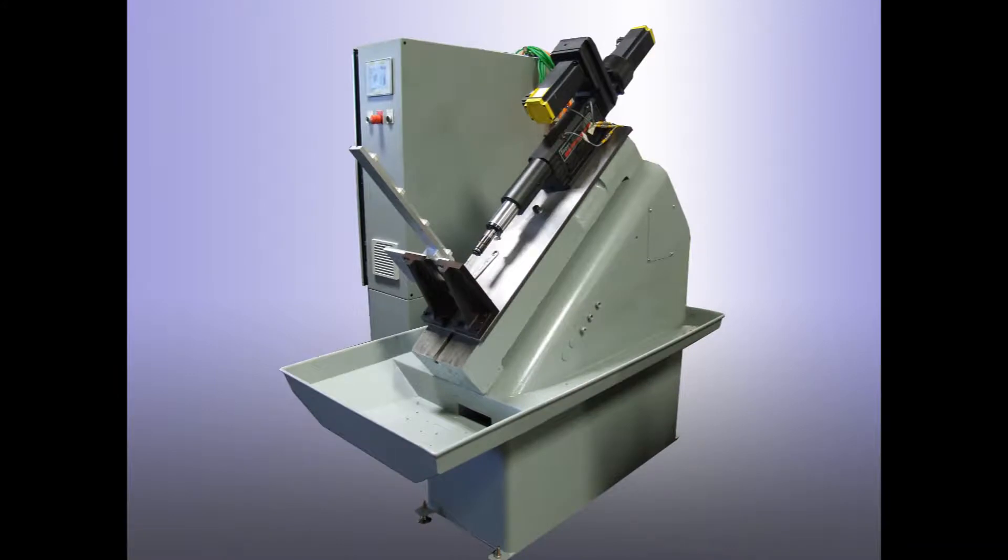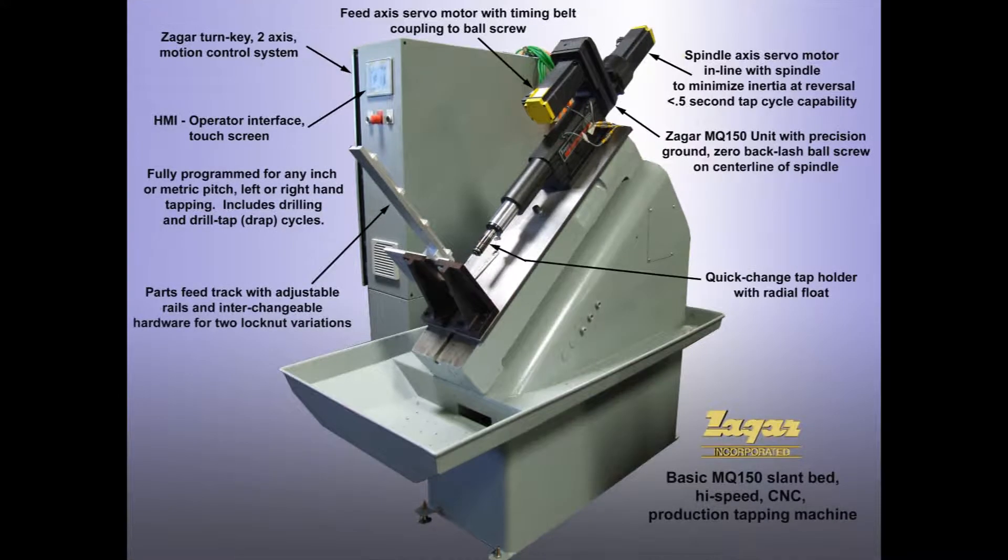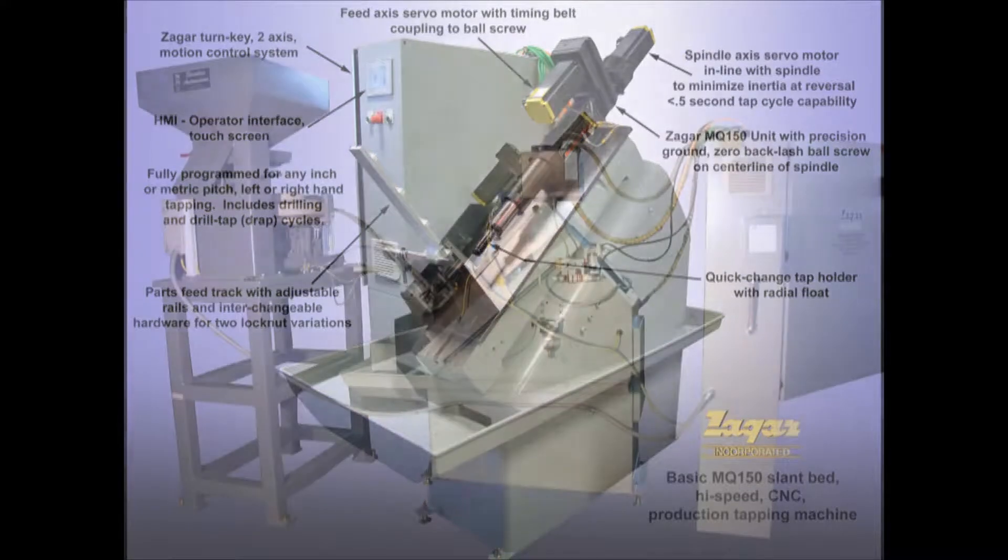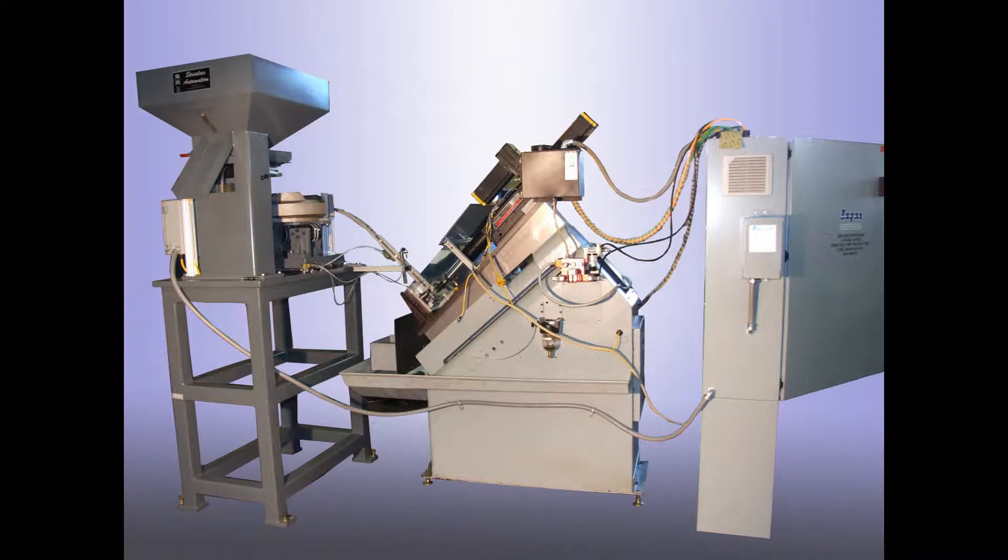The basic machine is a slant bed standard that features an MQ-150 unit with a spindle-axis servo motor mounted in line with the spindle to minimize inertia. The motion control system is a Zagar standard fully programmed for tapping, drilling, or combined drilling and tapping operations.